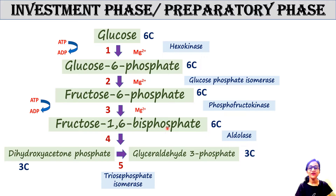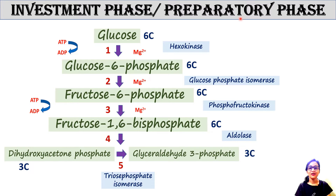Fructose-1,6-bisphosphate, a 6-carbon compound, is split into one molecule of dihydroxyacetone phosphate and one molecule of glyceraldehyde-3-phosphate — both 3-carbon compounds. This reaction is performed by aldolase. Dihydroxyacetone phosphate then rapidly converts into glyceraldehyde-3-phosphate by the enzyme triosephosphate isomerase, which is an isomerization reaction.